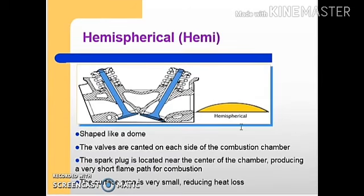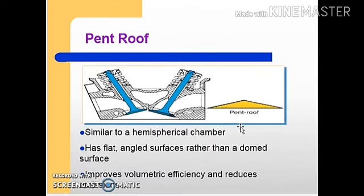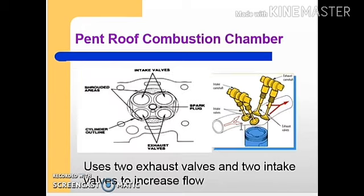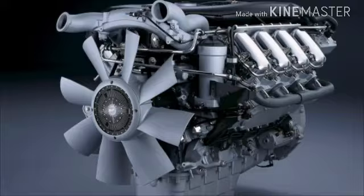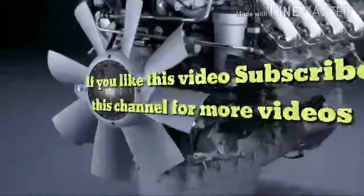The hemispherical type combustion chamber is shaped like a dome. The valves are canted on each side of the chamber, and the spark plug is located near the center, producing a very short flame path for combustion. The surface area is very small, reducing heat loss. The pent-roof combustion chamber is similar to the hemispherical chamber but has flat angled surfaces rather than a domed surface. It improves volumetric efficiency and reduces emissions, using two intake valves and two exhaust valves to increase airflow.